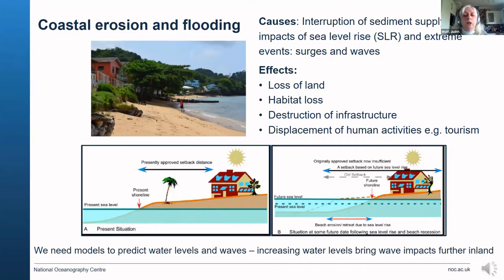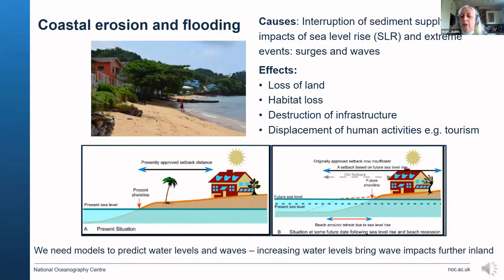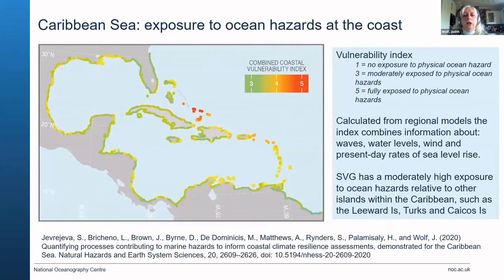If you have a large raise in sea level, whether it was an extreme event like a surge or an inexorable gradual rise of sea level, we really have to take these very seriously because it brings the waves closer to the shore. It's the waves that basically cause the damage at the shore, so we need models to predict water levels and waves.